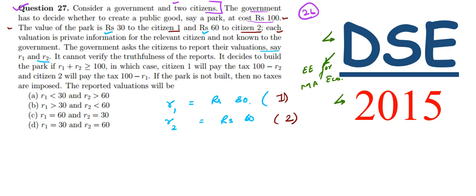The government cannot verify the truthfulness of the reports. It decides to build the park if R1 plus R2 is greater than or equal to 100. If the summation of both costs is equal to or greater than rupees 100, then only the park will be created.